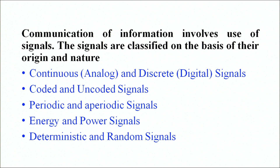There are other kinds of signals also, like coded and uncoded signals, and periodic and aperiodic signals. Periodic signals simply means signals which are going to repeat themselves, while aperiodic signals are not repetitive. There are also signals in the form of energy and power signals, and deterministic and random signals. But right now, our focus is primarily on continuous (analog) signals and discrete (digital) signals.